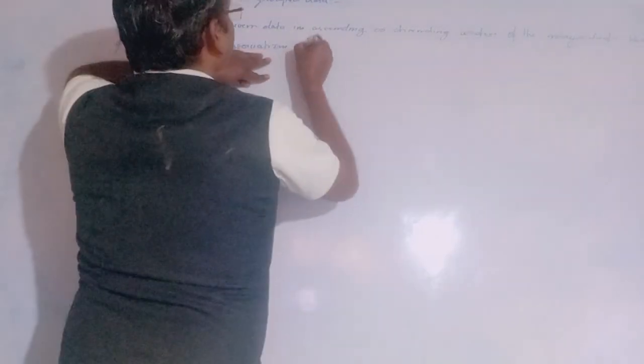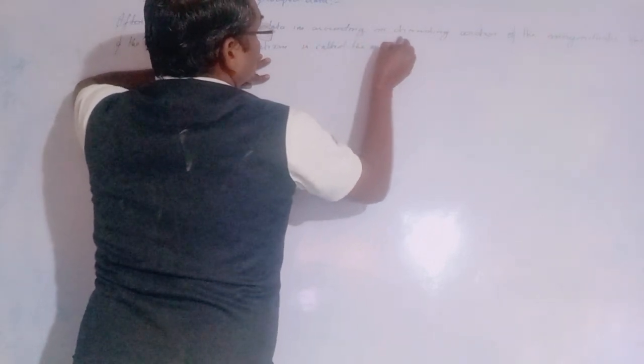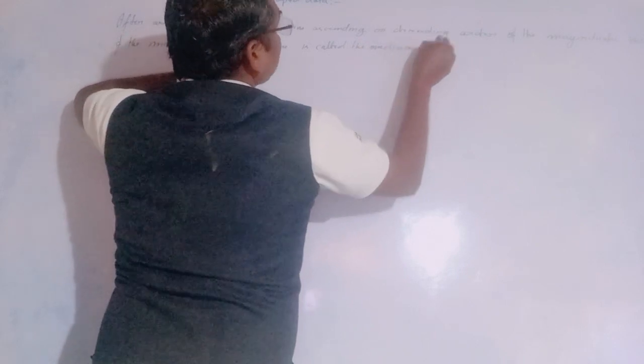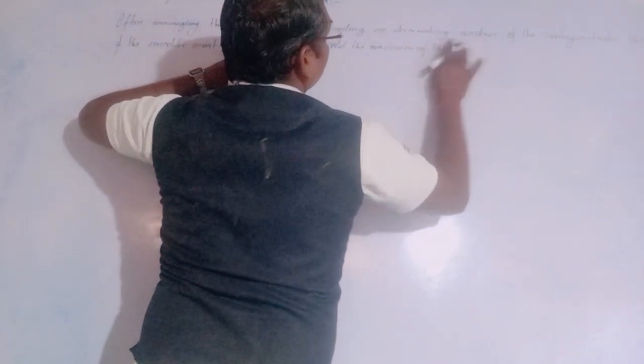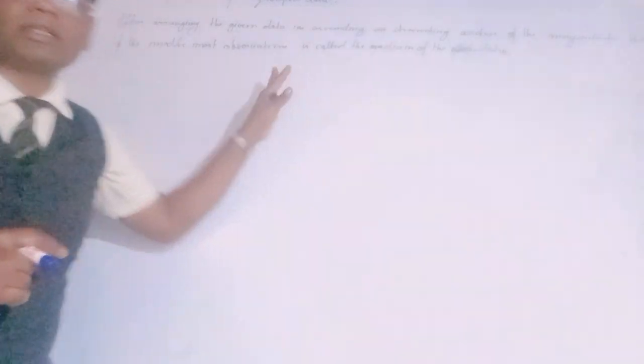The value of the middle-most observation is called the median of the given data. This is the definition, and from it you will understand how we define and work with the median.